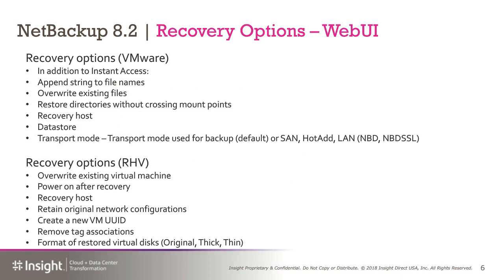With NetBackup 8.2 and some of the new things in the Web UI, they've added additional recovery options specific to VMware. Instant access — the ability to access a VM from the backup storage — was included in 8.1.2. Now we can also append strings to file names, overwrite existing files, restore directories without crossing mount points, and define the recovery host, data store, and how we move that data back to our ESX environment. For KVM, they've added: overwrite the existing virtual machine, power on after recovery, defining the recovery host, keeping the original network configuration, creating a new VMUUID, removing tag associations, and reformatting the restored virtual disk as original, thick, or thin.